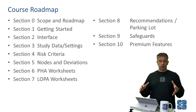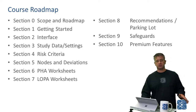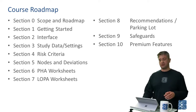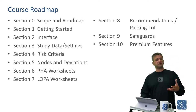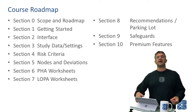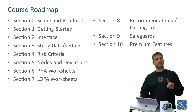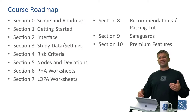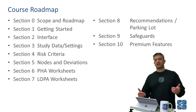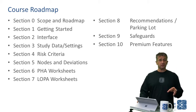What you see now is a roadmap of all of the sections contained in this training course. We start where we are right now in section zero, which is the scope and roadmap. We'll move on to section one, getting started using the applications, which introduces both the desktop version and the premium cloud-based version. We'll move on to section two, where we discuss interface and navigation. Then section three, where we talk about what data is contained in the study, what the settings are, and how you can change the look and feel of the application from that page.